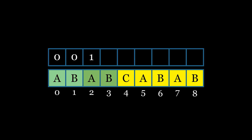The character B also has a matching prefix, which is the second character B, so its value in the LPS table will be 2. Similarly, we will check the prefix-suffix relationships for all the subsequent elements in the pattern and fill in the LPS table accordingly.